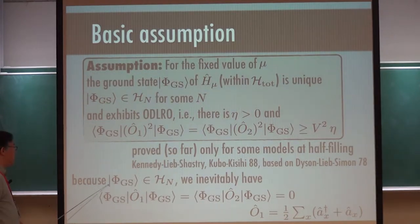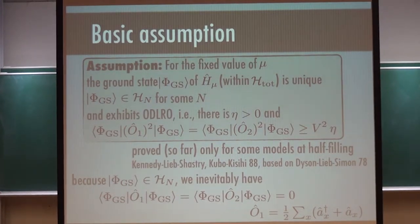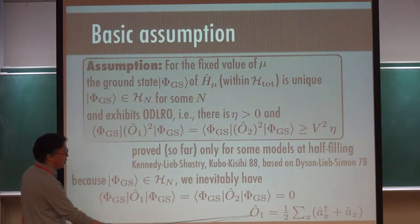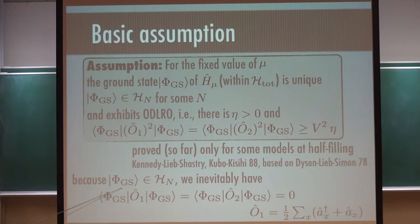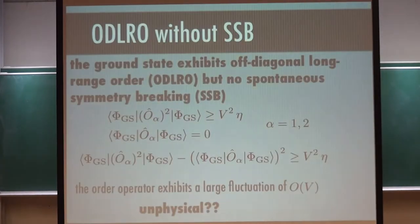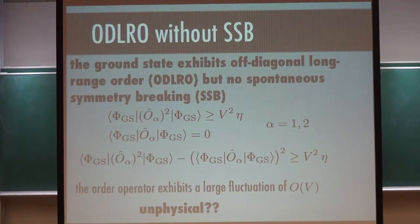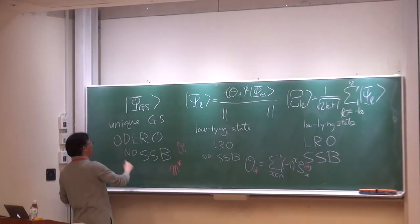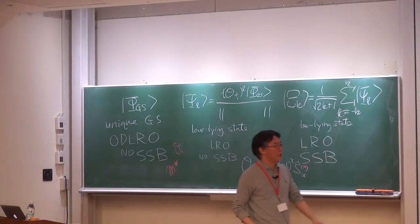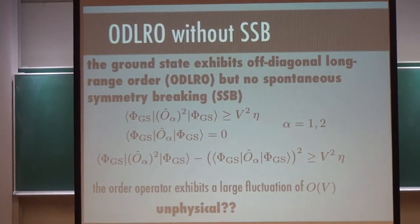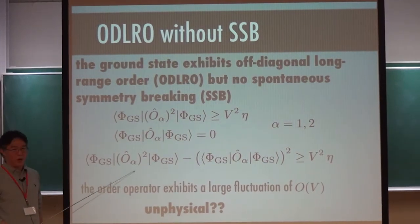Unfortunately, this has been proved only for the half-filling case by Kenyon-Lieb-Shastry and Dyson-Lieb-Simon, based on reflection positivity. We don't know of any other ways of proving this. Since O1 is just a sum of creation and annihilation operators, its expectation value in the ground state with definite boson number is zero. So we have a very similar situation as before — under the assumption that the ground state exhibits Bose-Einstein condensation, the ground state shows off-diagonal long-range order but no spontaneous symmetry breaking.